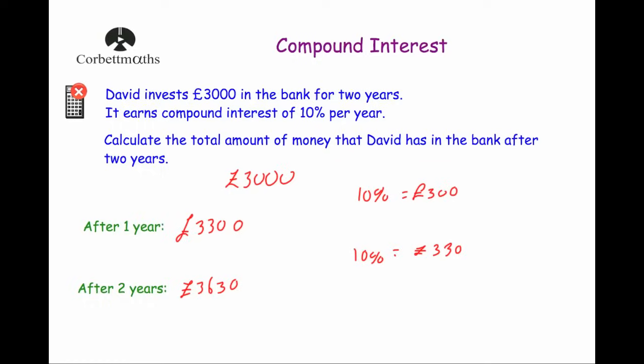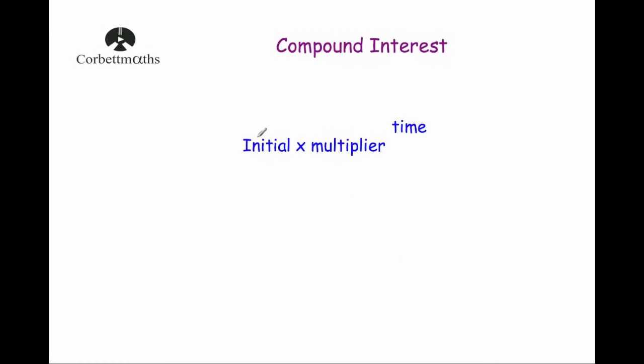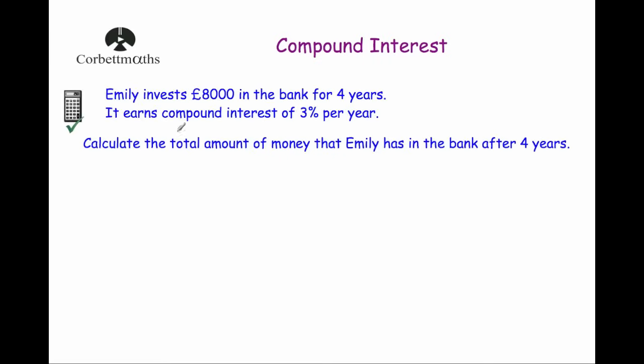Now, the formula — initial times multiplier to the power of time — is really useful for calculator questions. It makes it quick and simple to solve compound interest questions.